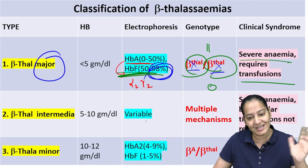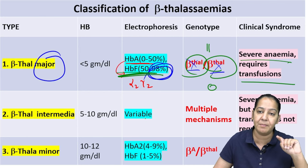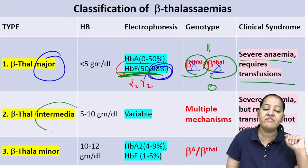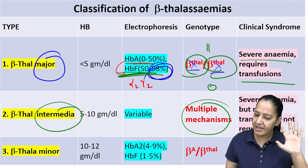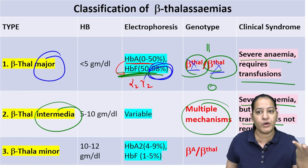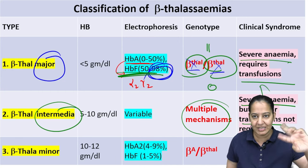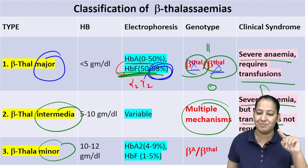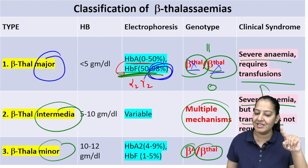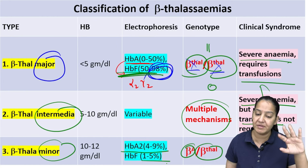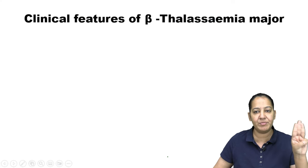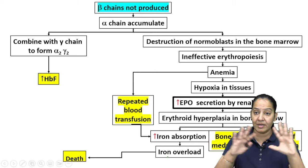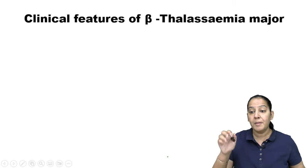In beta thalassemia intermedia, anemia is severe but blood transfusion is not required as frequently as in major — it's between the two extremes. In beta thalassemia minor, one gene is normal and one is mutated; patients are usually asymptomatic. HbA2 is 4–9%, HbF is 1–5%, and the major hemoglobin is still hemoglobin A.